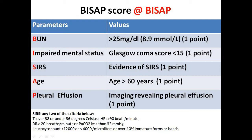To classify a patient as having SIRS, they must meet at least two of four criteria: temperature over 38°C or under 36°C; heart rate more than 90 beats per minute; respiratory rate more than 20 breaths per minute or PaCO₂ less than 32 mmHg; and leukocyte count more than 12,000 or less than 4,000, or over 10% immature forms (bands). If the patient meets two out of these four criteria, they are classified as having SIRS and receive one point.